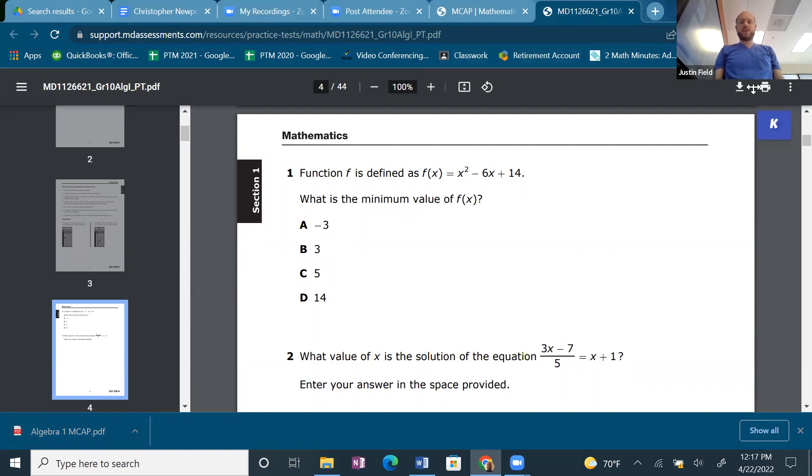The function f is defined as f(x) = x² - 6x + 14. What is the minimum value of f(x)? That's not hard. We just need to find the minimum value.